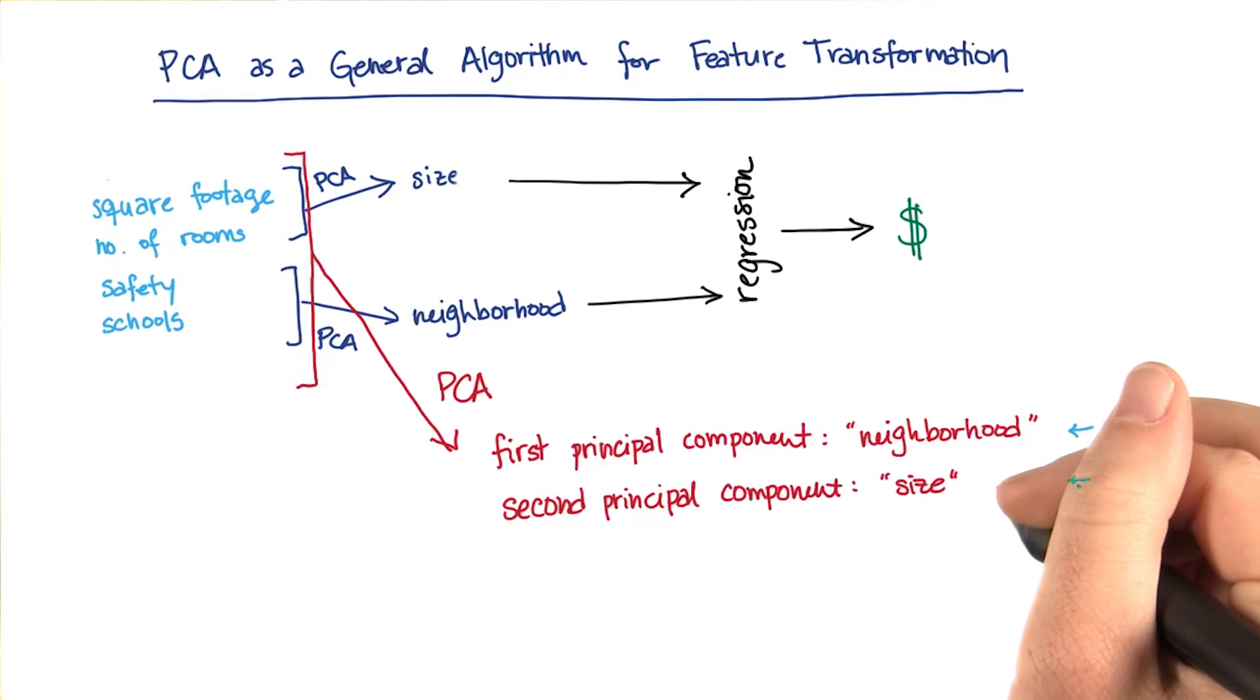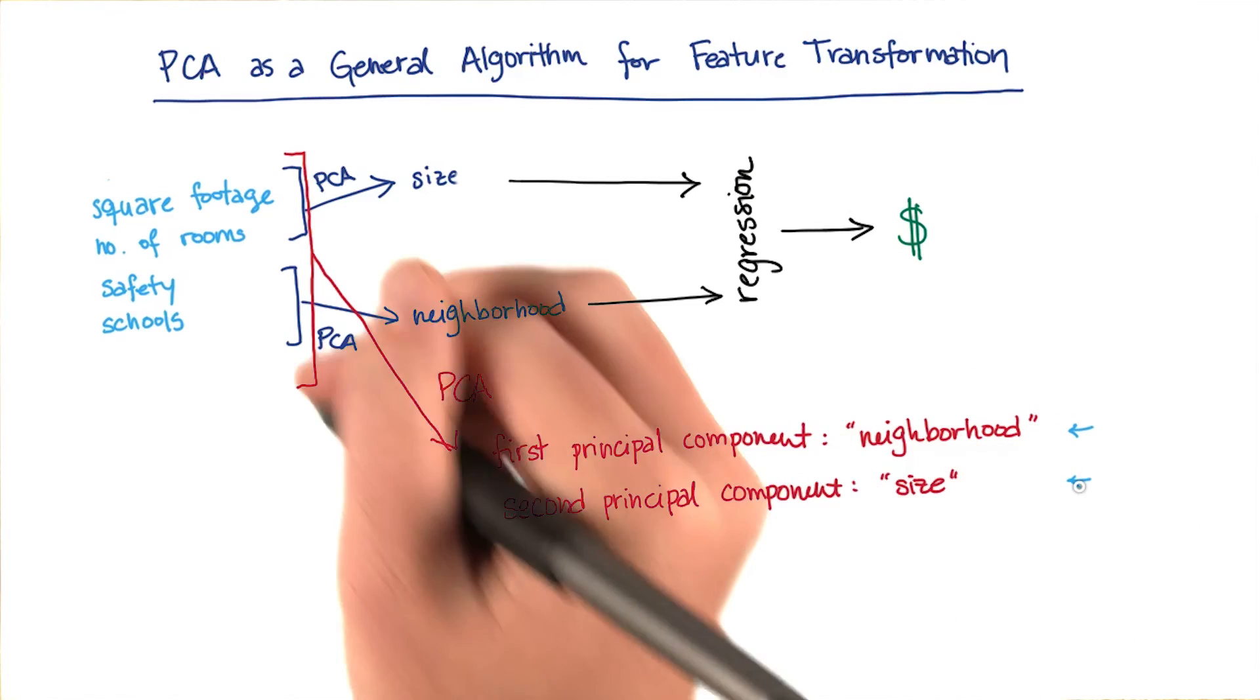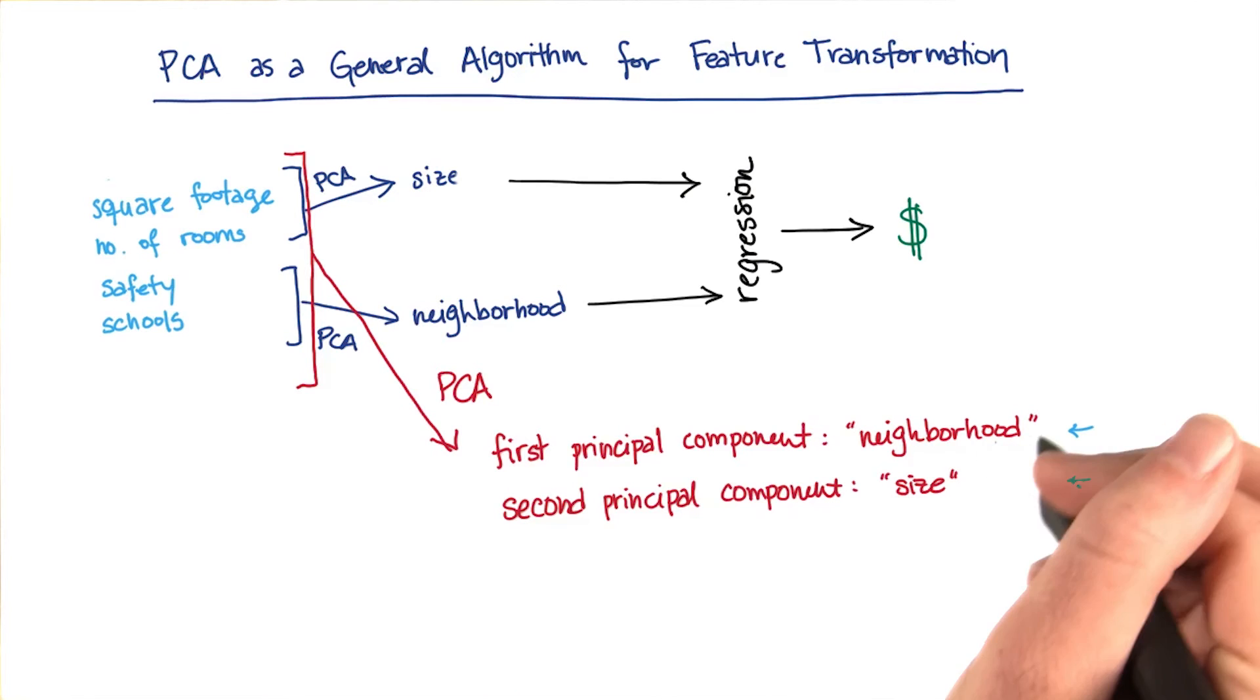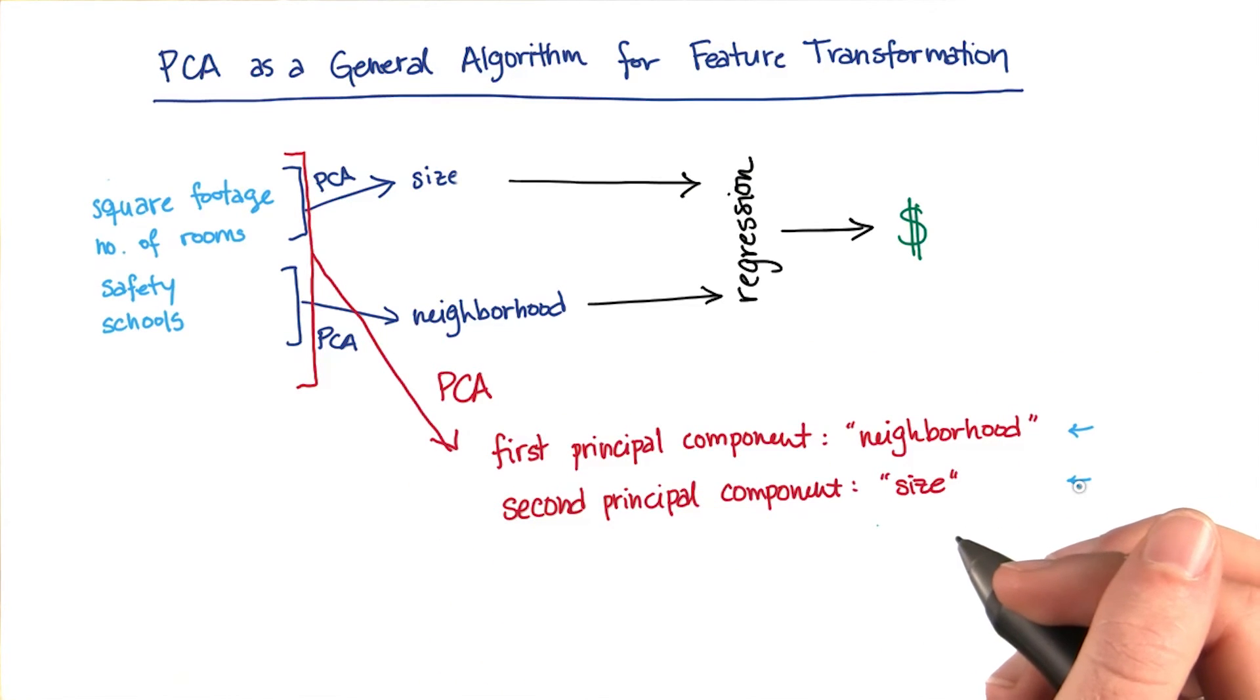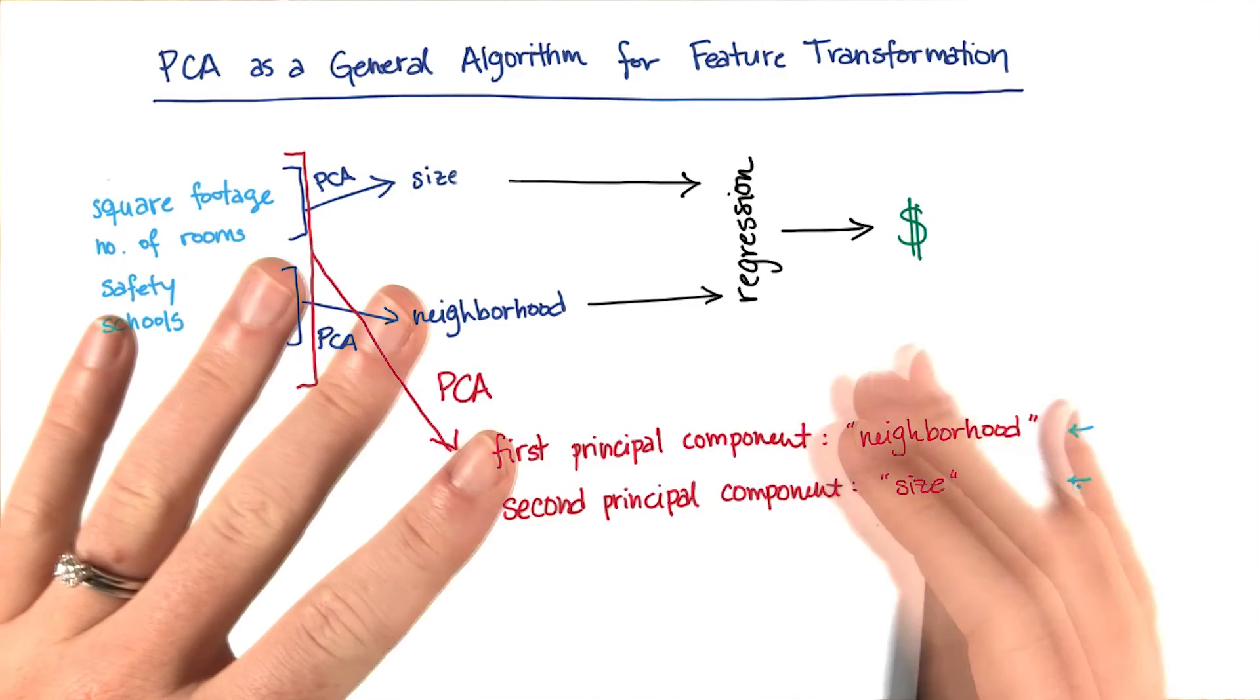It's a little bit harder to make these interpretations now, because what can and does happen is that the first principal component will be an admixture that has little bits and pieces from potentially all of the features. But this is a very powerful unsupervised learning technique that you can use to fundamentally understand the latent features in your data.